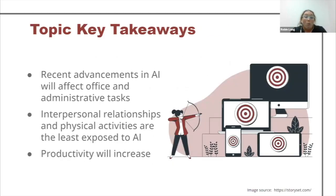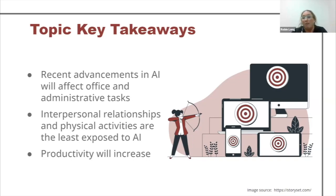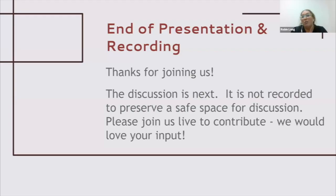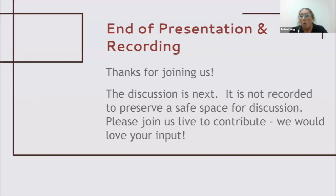Topic key takeaways: recent advancements in AI are going to affect office and administrative tasks. We know that interpersonal relationships and physical activities are least exposed to AI, and we know that it's going to increase productivity. Those of you who are teaching these trades and those of you from these trades — where do you see this going?